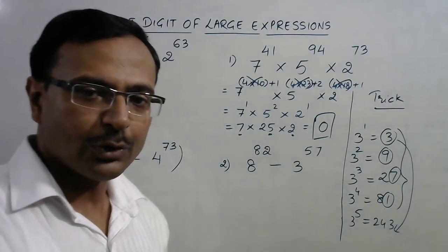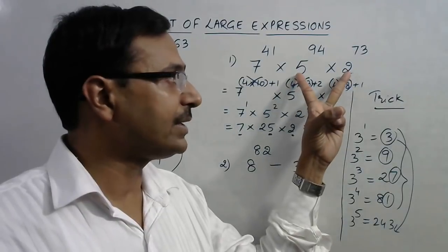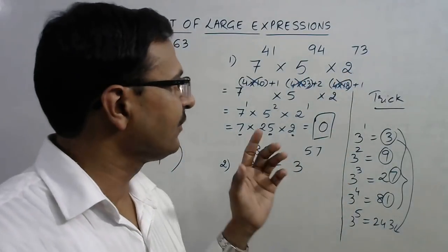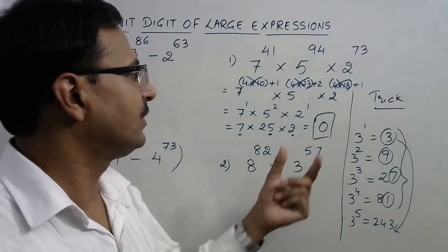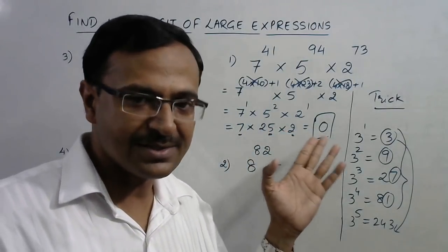If you do not follow this method, then 5 and 2, if they occur together, then your unit digit has to be 0 only. But in this case, you have proved that the unit digit is 0.